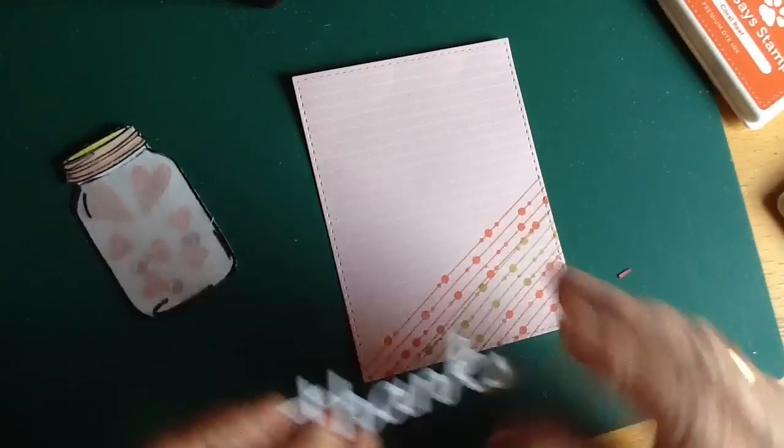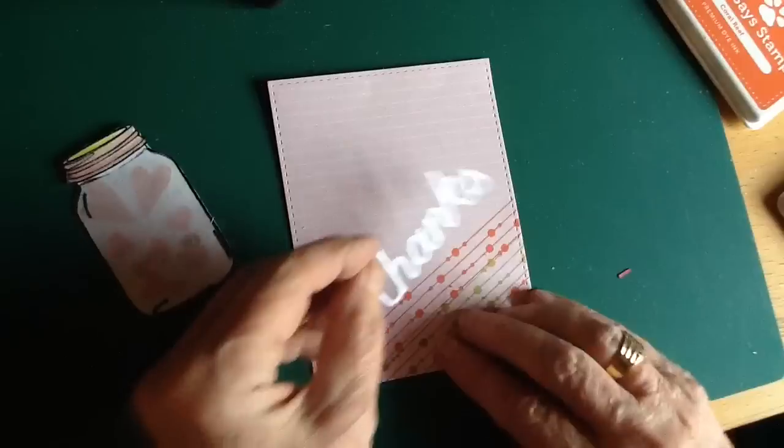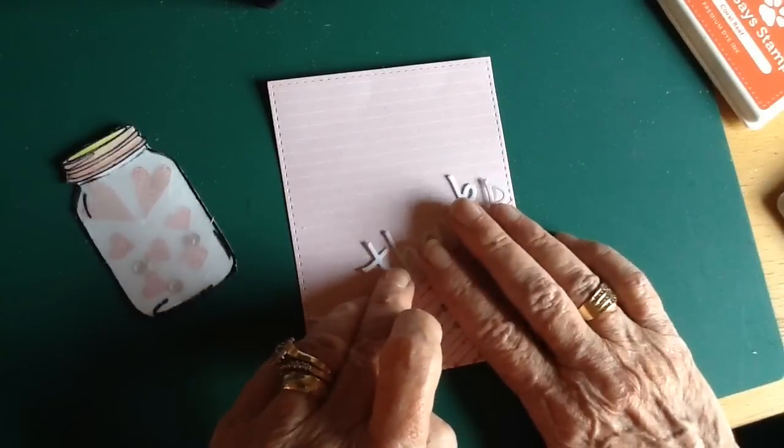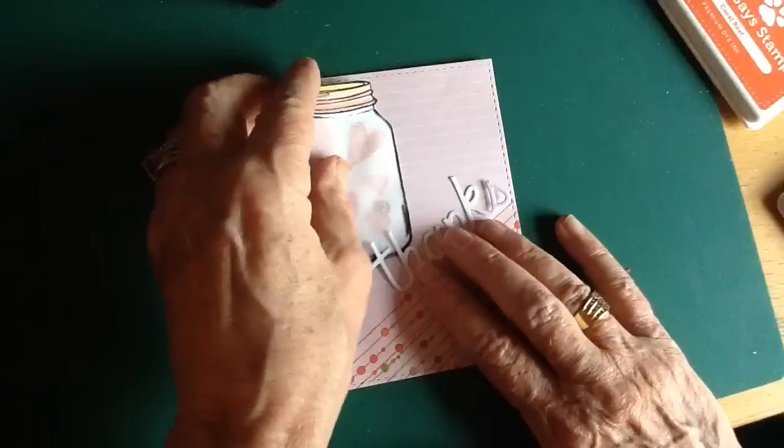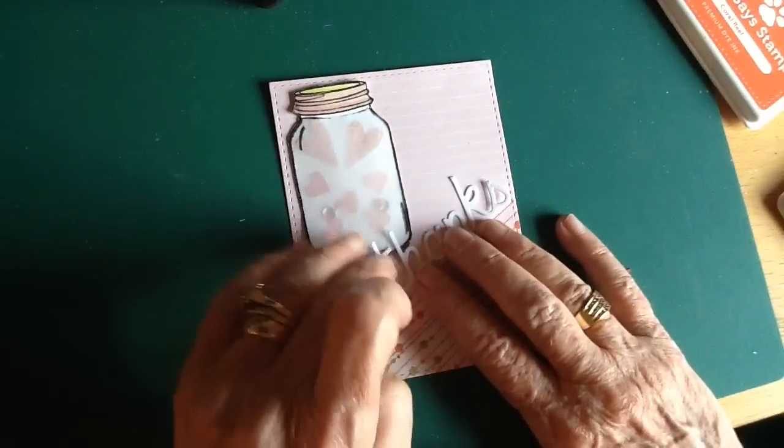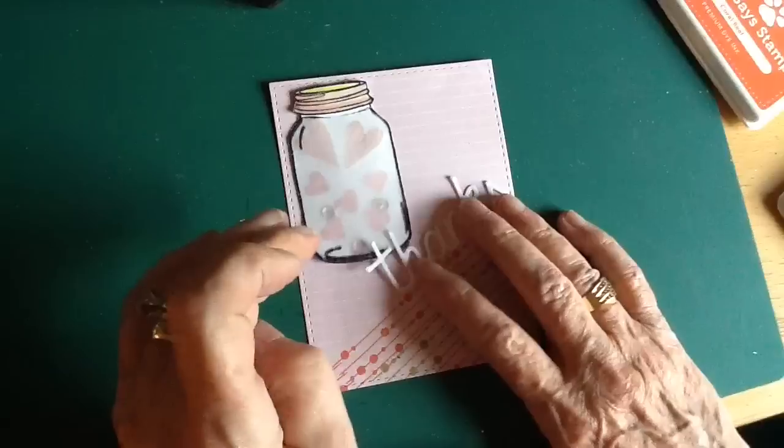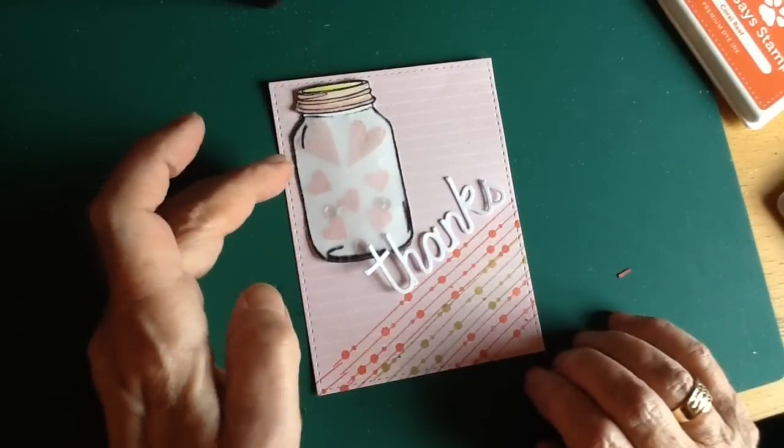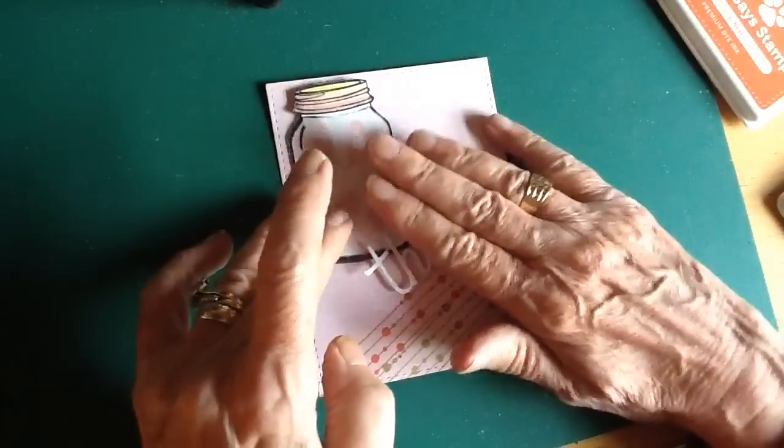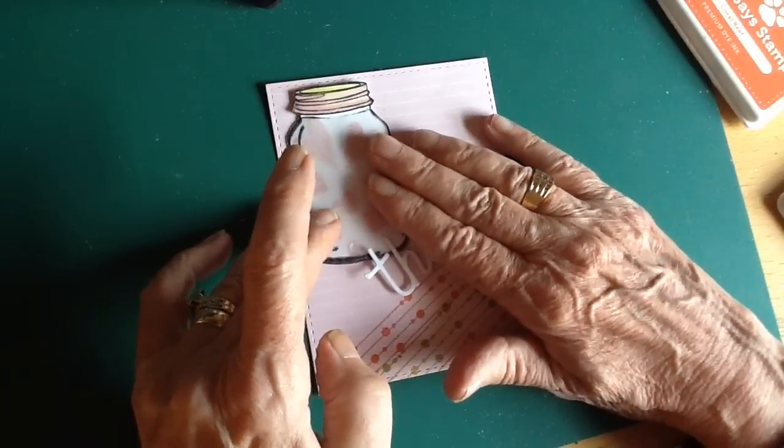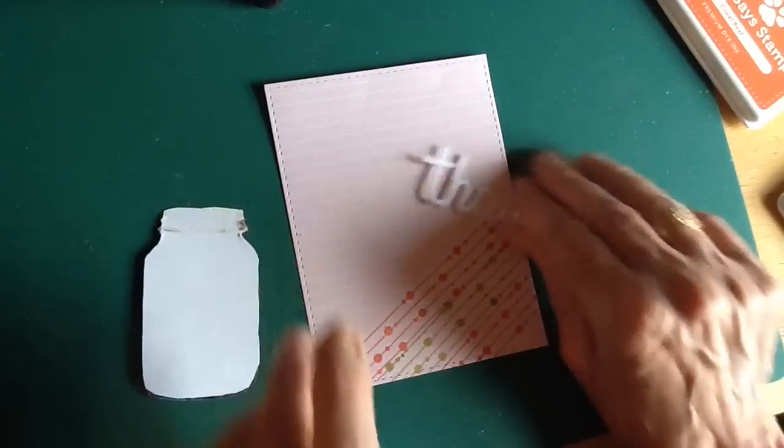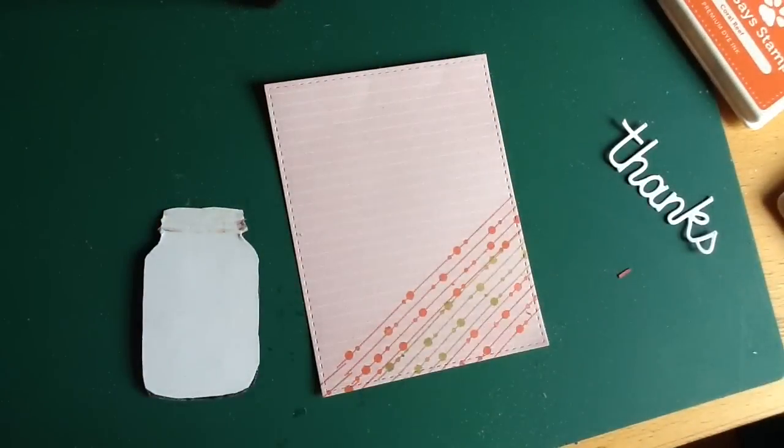And next I've die cut a thanks sentiment from Memory Box, and I'm just placing this. I think I'm going to put it on the cross here and the jar there, so I don't need to mark. Normally I would put a little pencil mark or something where the jar is going to go because the thanks is going to overlap it. But I can see looking at it that I just need to butt it up to the stitched lines, and if I glue it that way then it's going to work out okay.